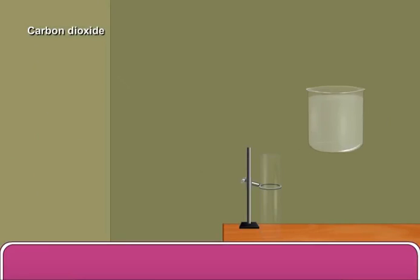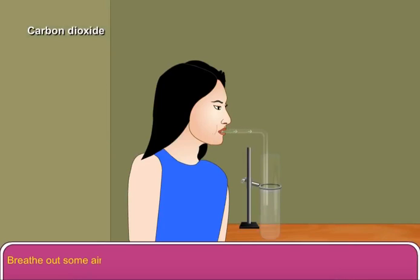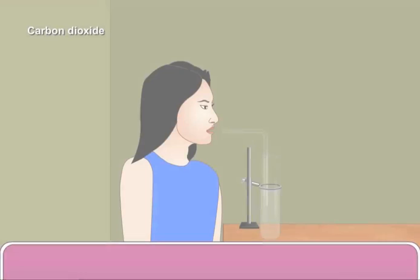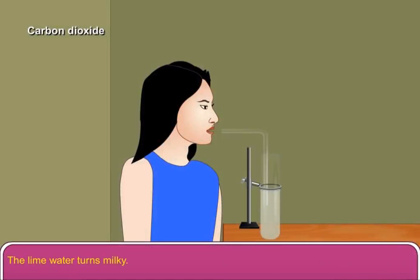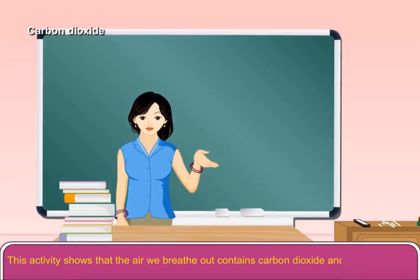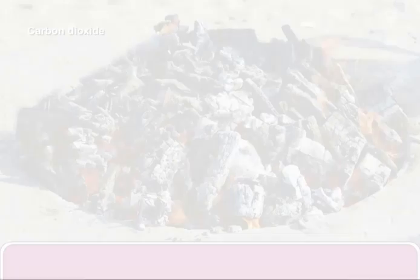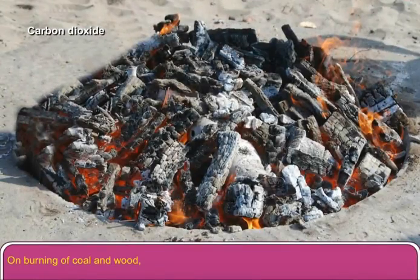We breathe out. Take a test tube and add some lime water in it. Breathe out some air into the lime water with the help of a straw. The lime water turns milky. This activity shows that the air we breathe out contains carbon dioxide, and the lime water turns milky due to the formation of calcium carbonate.